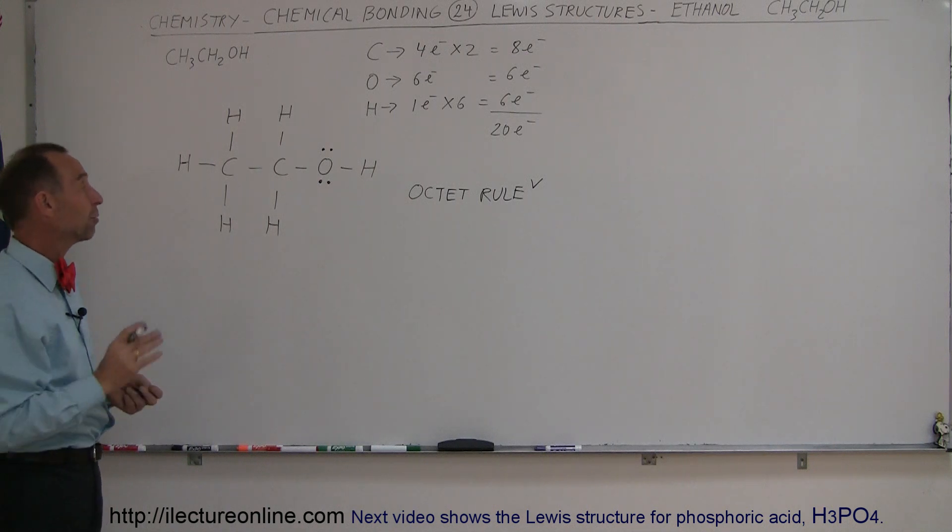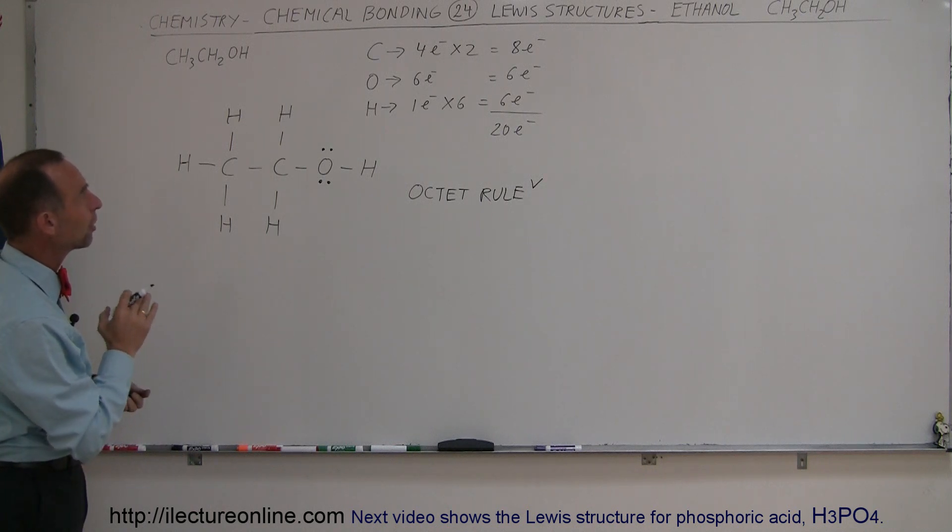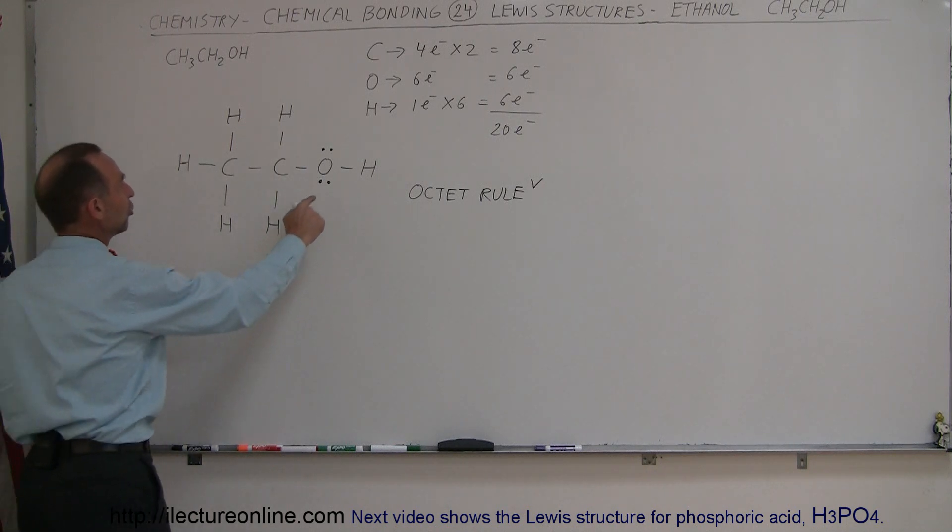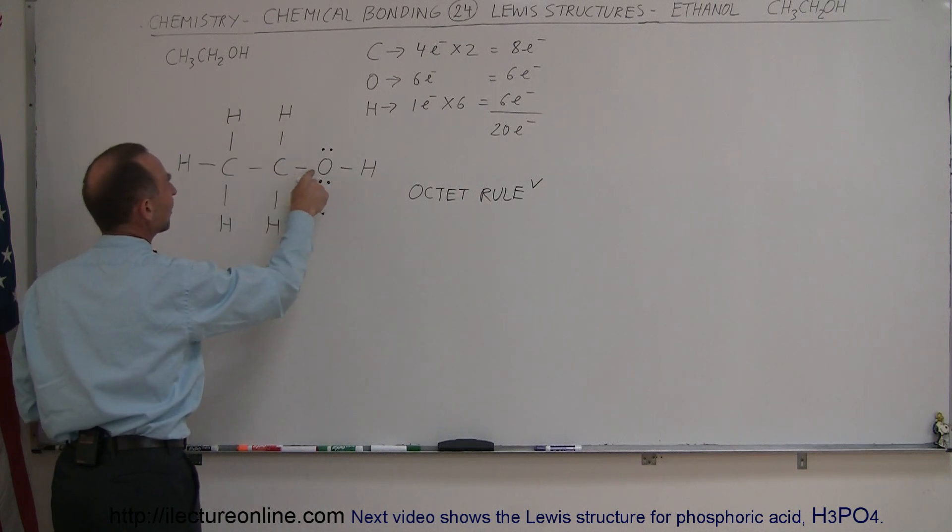Now the last check to make sure we have a good Lewis structure for the ethanol molecule is to verify we use the proper number of electrons. So we have two and two more—four free electrons—plus how many bonds do we have? We have one, two, three, four, five, six, seven, eight bonds.